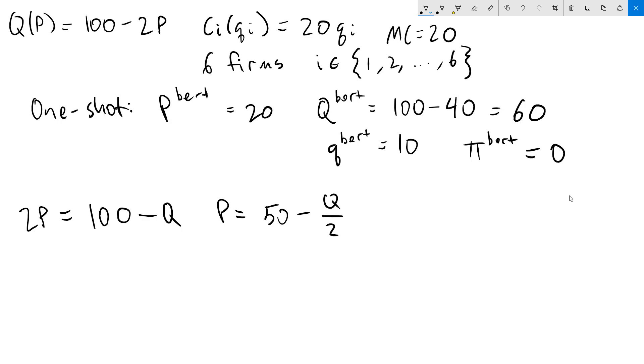I will now set up the monopolist profit function, which is pi equals price times quantity. That's going to be our revenue, so 50 minus Q over 2 times quantity of Q minus total cost of 20Q. Take the first order condition, get 50 minus Q minus 20 equals 0. Solve for Q and I get a monopoly quantity of 30. Plug that into our inverse demand function to get P equals 50 minus 30 over 2. So our monopoly price is 35.